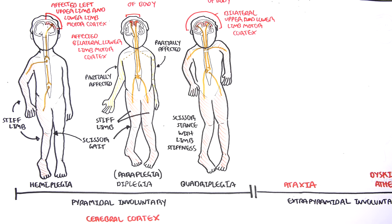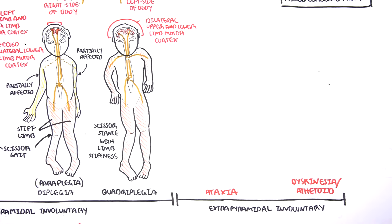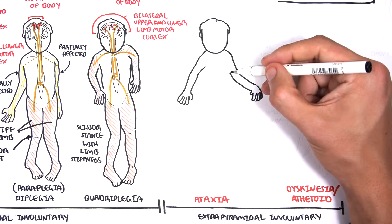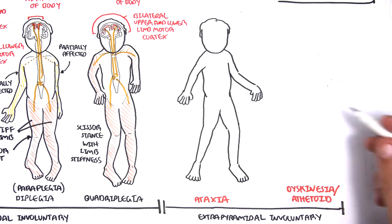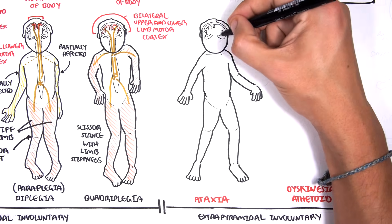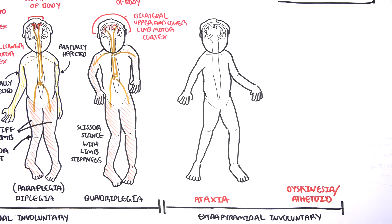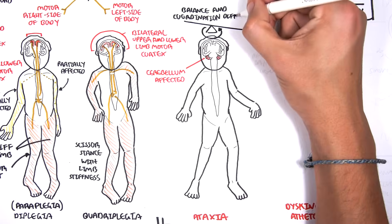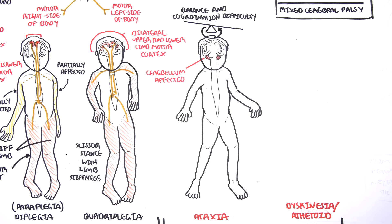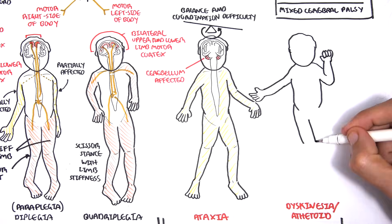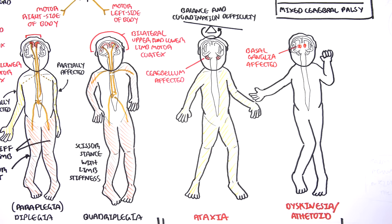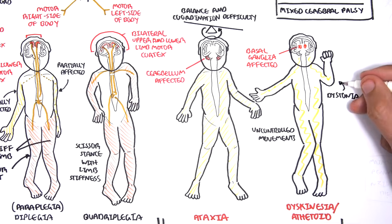That was pyramidal, or spastic, cerebral palsy affecting the cerebral cortex. In extrapyramidal cerebral palsy, all of the body is affected — there is no hemiplegia, diplegia, or quadriplegia, everything is involved. In ataxic cerebral palsy, the cerebellum is the problem — it is a vital structure for balance and coordination, so if affected there is balance and coordination difficulty and the person will have a wide gait. In dyskinetic cerebral palsy, the basal ganglia is involved, creating uncontrolled movements and dystonia.